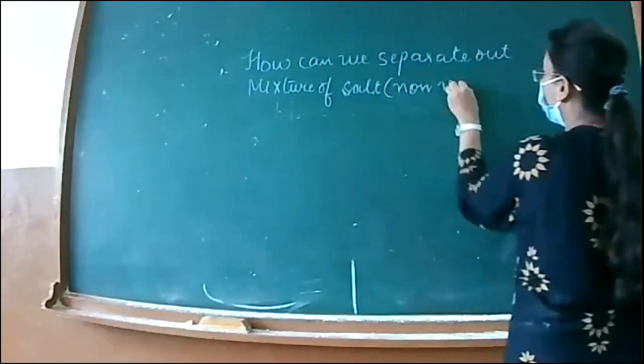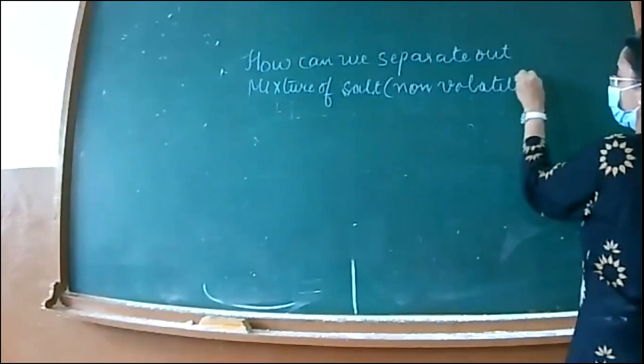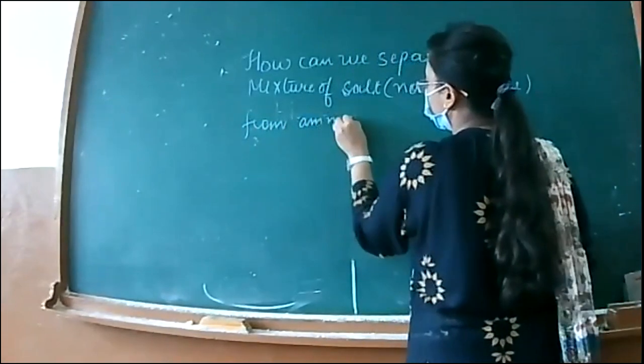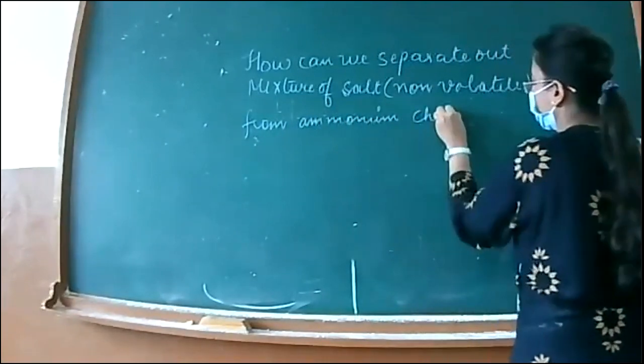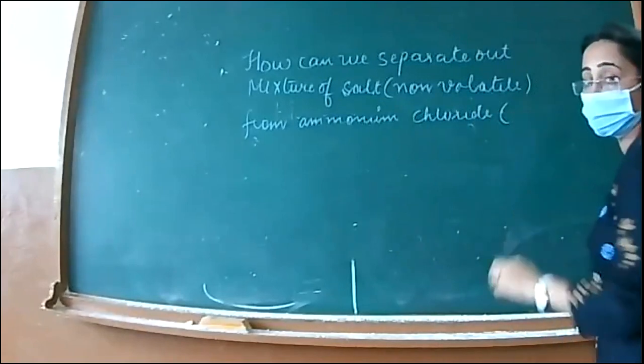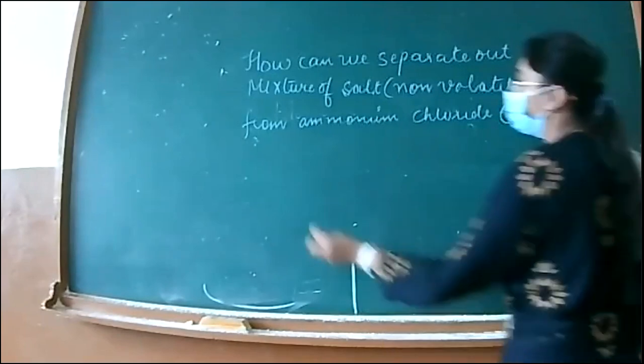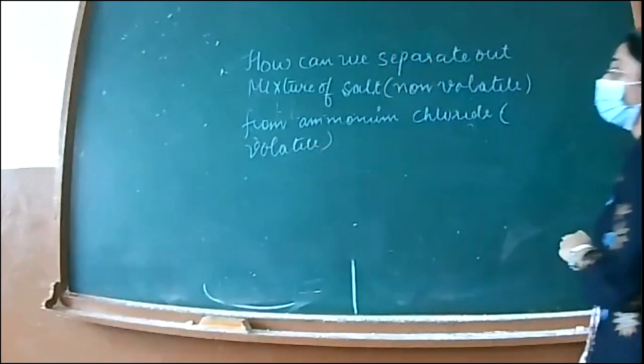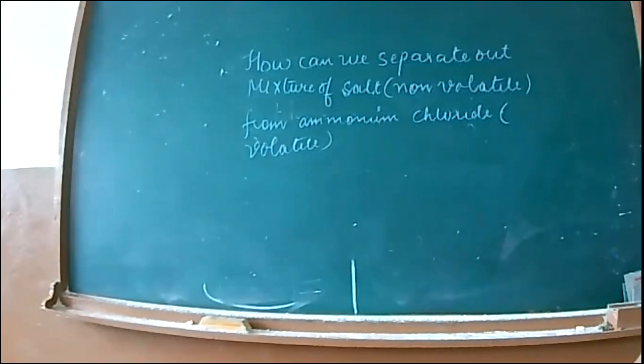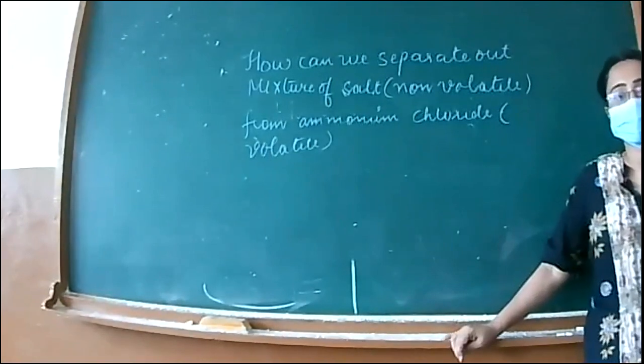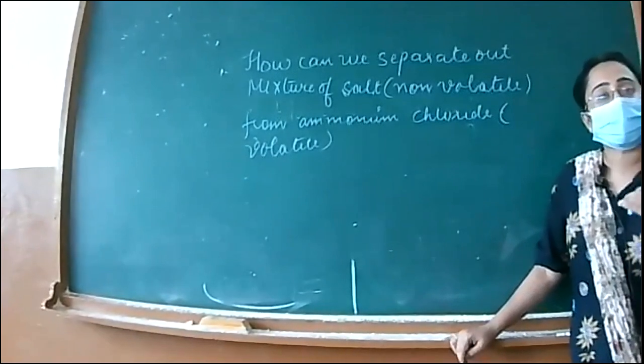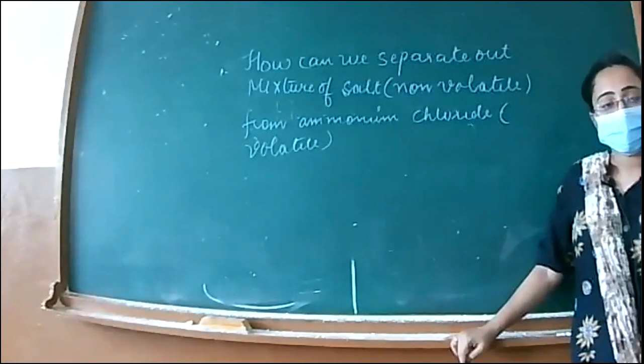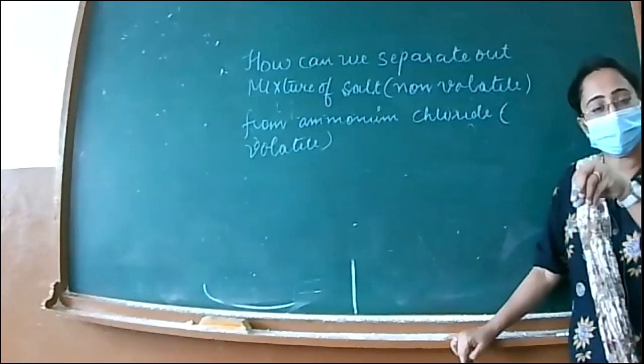You can write in the bracket non-volatile from ammonium chloride. Here you will write it as volatile. The salt is non-volatile. We covered solid solute and non-volatile solvent.